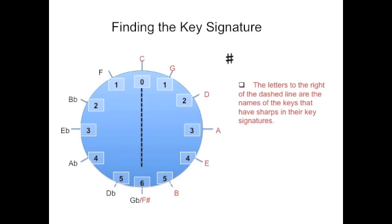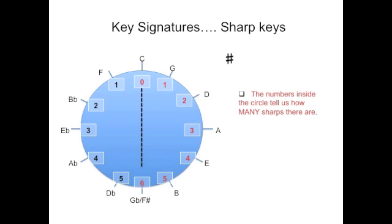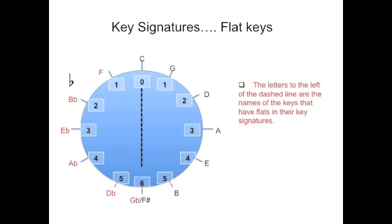All right, we're going to find the key signatures now. The letters on the outside of the circle tell us the letter name of the key we're dealing with. The numbers inside the circle tell us how many sharps or flats are in that key. Here's the flat side. Letters on the outside tell the name of the key. Numbers on the inside of the circle tell us how many flats are going to be in that key.